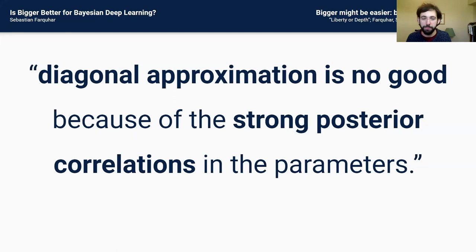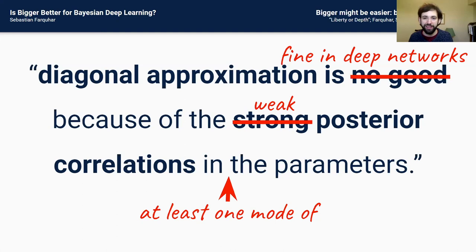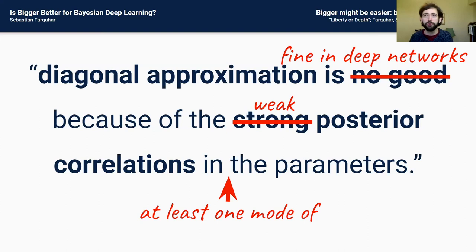So let's take MacKay's claim and annotate it slightly. The diagonal approximation is actually fine in deep networks — not because MacKay was wrong (in 1992 no one was imagining hundred-layer neural networks) — but because of the weak posterior correlations at least at one mode of the parameter distributions. Remember you're free to learn whatever weights you choose; you can find representations of the function in this parameterization which suit the mean field approximation, particularly when you're learning that jointly.